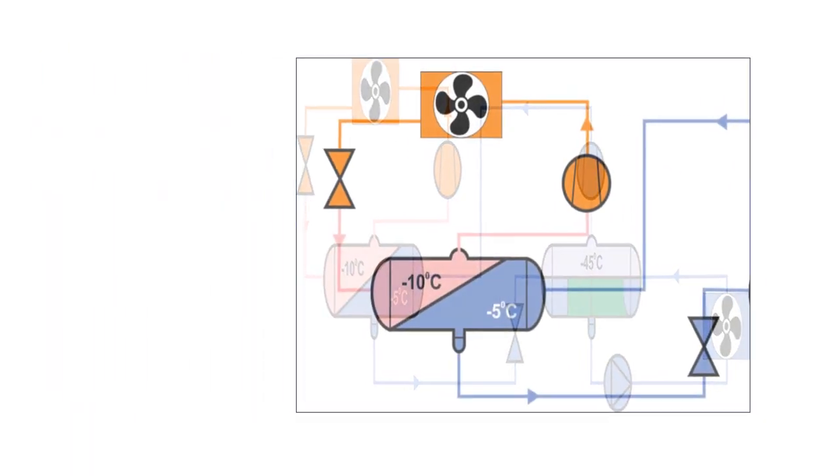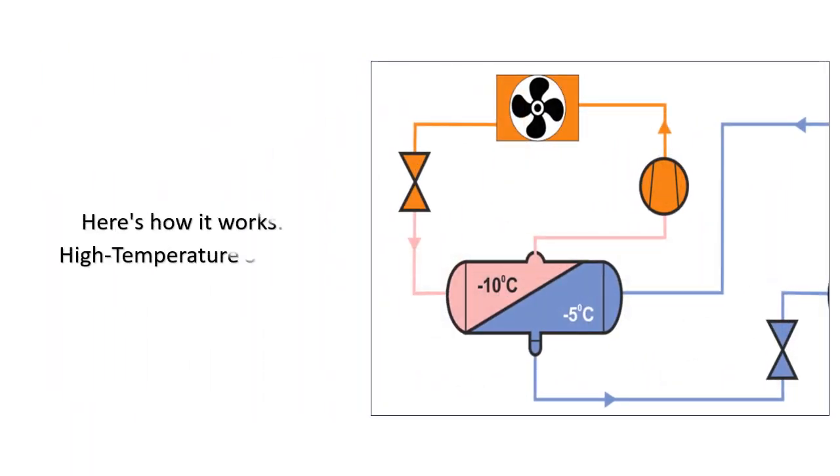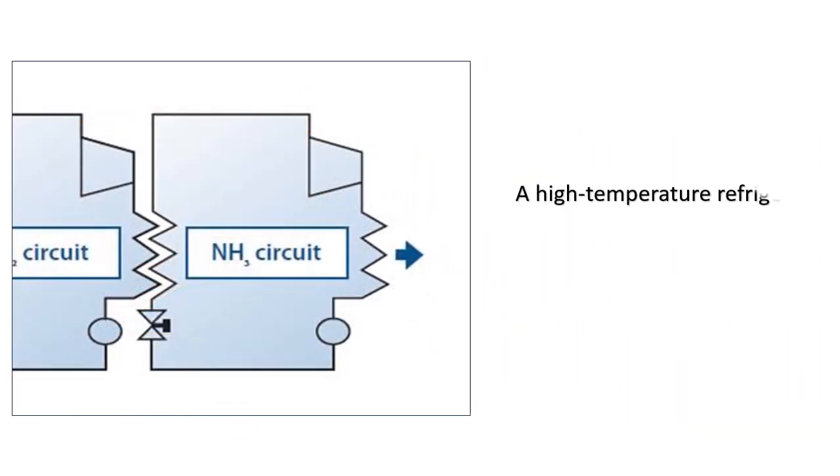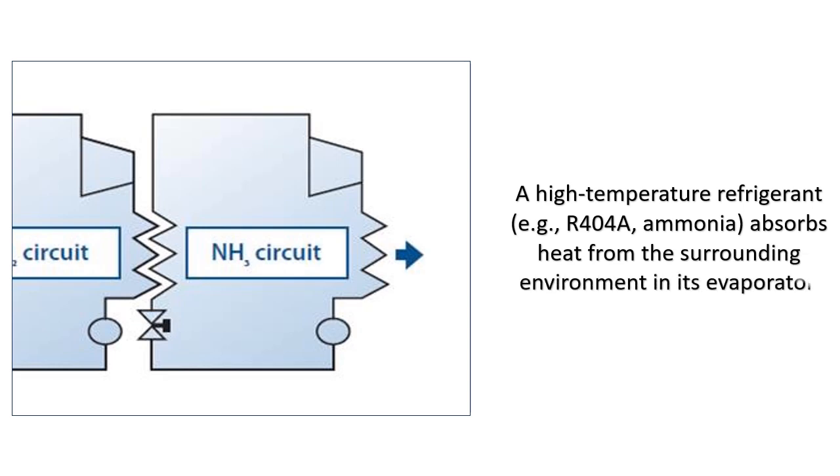Here is how it works. High temperature stage: A high temperature refrigerant, e.g., R404A, ammonia, absorbs heat from the surrounding environment in its evaporator.